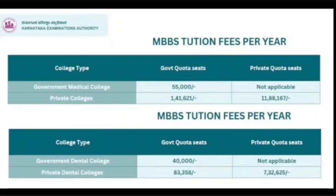Now the main important thing — MBBS. Medical seats are very costly. Medical and dental fee structures were also discussed in today's workshop — this is official information. For government medical college government quota seats, there are 88 seats and the total fees you have to pay is 55,000 rupees.